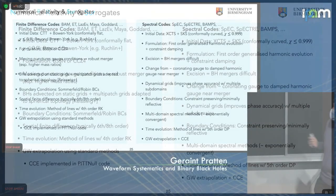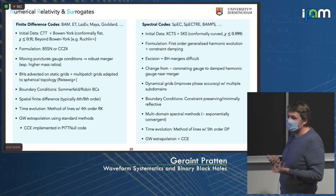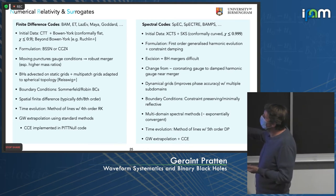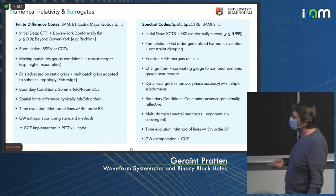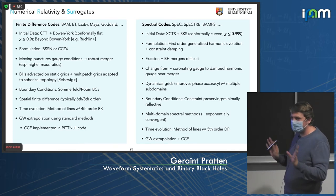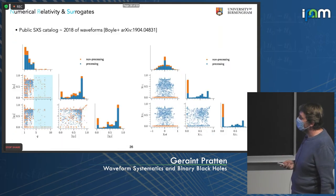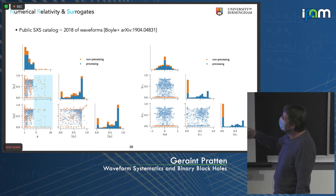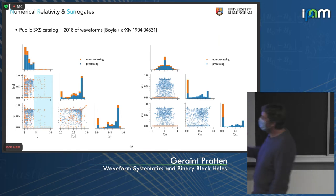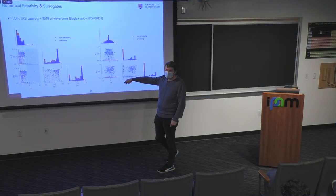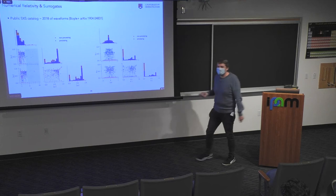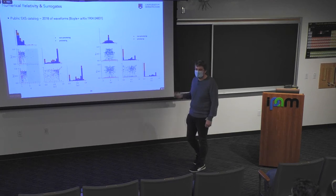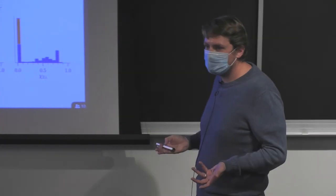For numerical relativity, there are different codes — finite-differencing codes such as BAM and the Einstein Toolkit, and spectral codes such as SpEC — with various choices of Einstein equation formulation, initial data, and numerics. The largest public release is the SXS catalog with around 2018 waveforms. A key takeaway is that for mass ratios above four, there is still a depletion of NR simulations. As soon as you go above mass ratio four, there's just a depletion of accurate, long, especially high-spin NR simulations, which impacts the validity of your models in those regions.